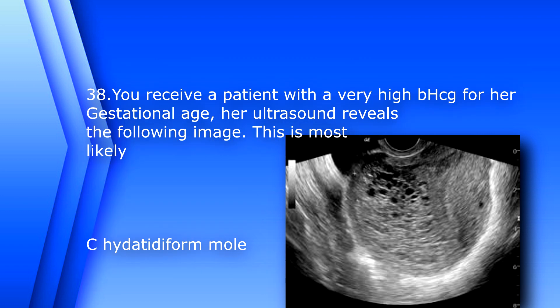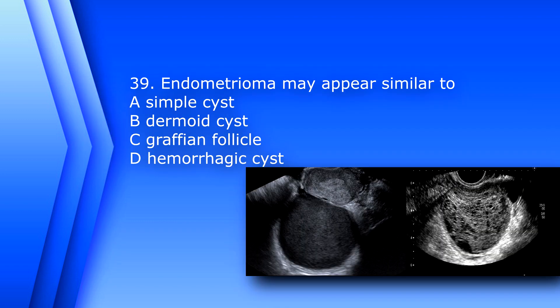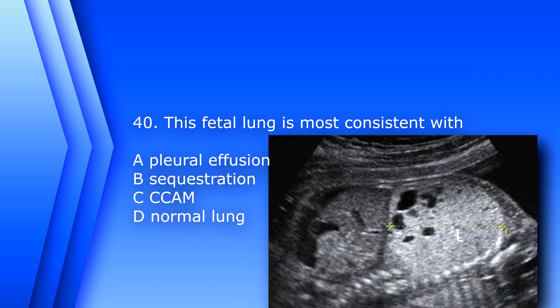Question 39: Endometrioma may appear similar to A) simple cyst, B) dermoid cyst, C) Graafian follicle, or D) hemorrhagic cyst. Dermoid cysts are very complex. Simple cysts are anechoic, as are Graafian follicles. The answer is D, hemorrhagic cyst.